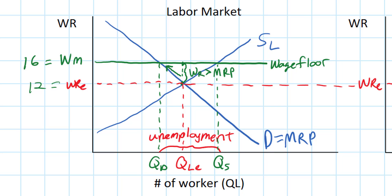One thing we can show on the graph is the inefficiency resulting from the minimum wage. There is a loss of total welfare in the labor market due to the fact that employers must pay higher wages and workers find it harder to get a job. The triangle highlighted in yellow represents the deadweight loss — or welfare loss — resulting from the imposition of the minimum wage in this labor market.